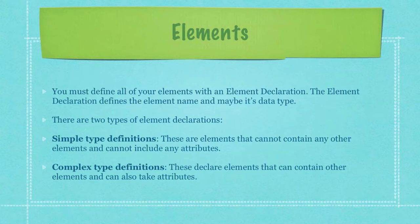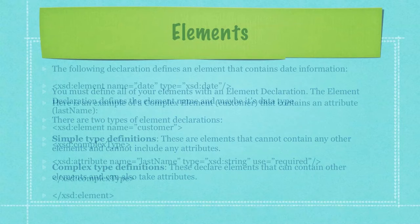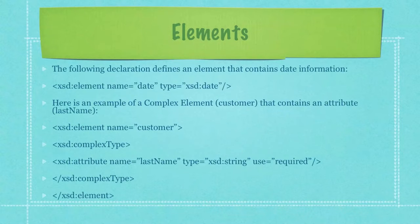You must define all of your elements with an element declaration. The element declaration defines the element name and possibly its data type. There are two types of element declarations: simple type definitions, which are elements that cannot contain any other elements and cannot include any attributes; and complex type definitions, which declare elements that can contain other elements and can also take attributes.